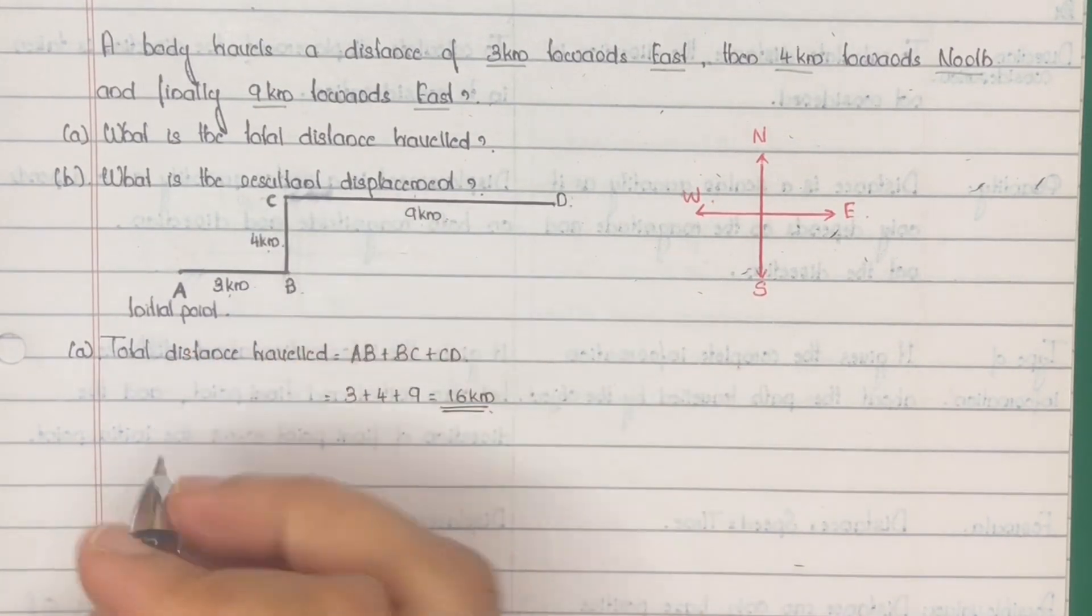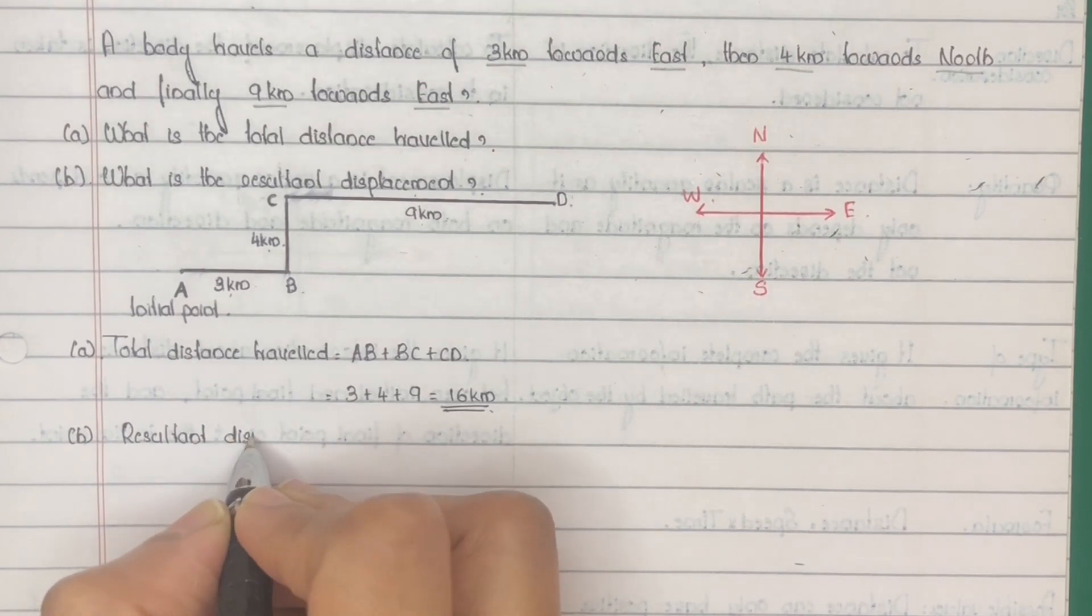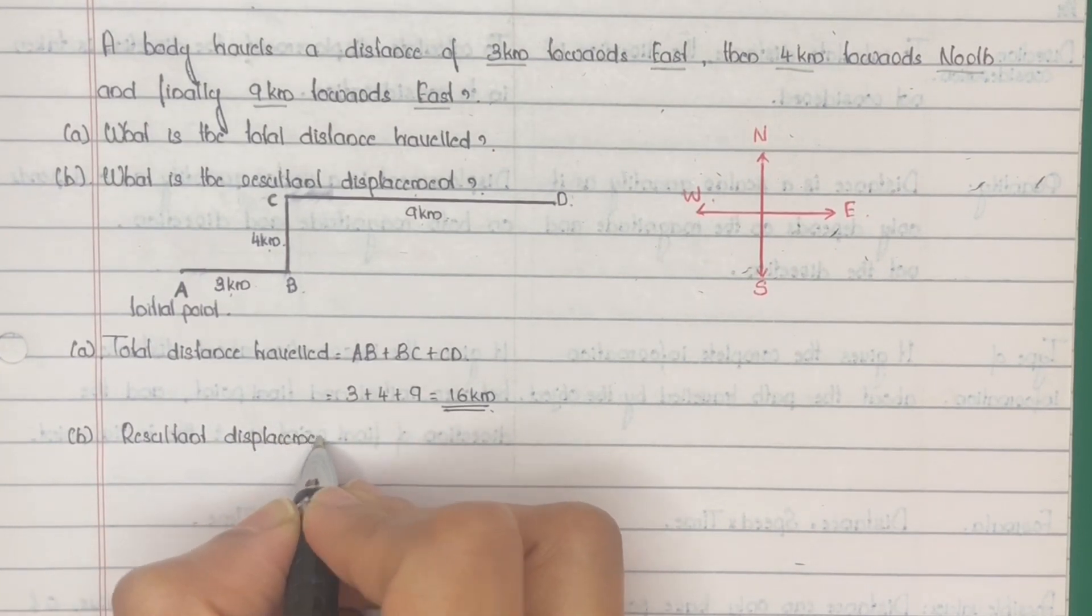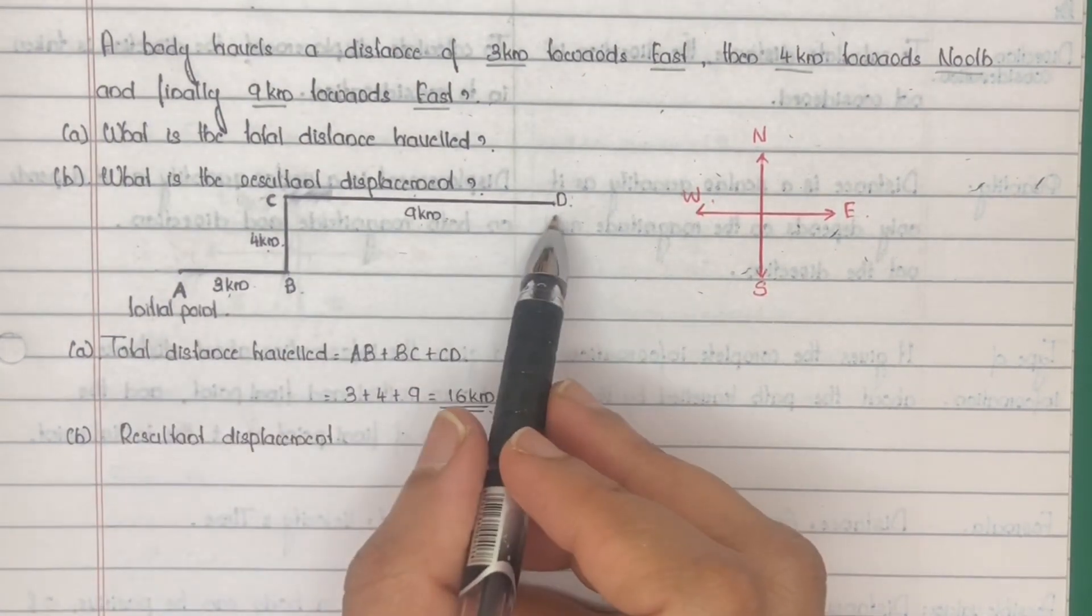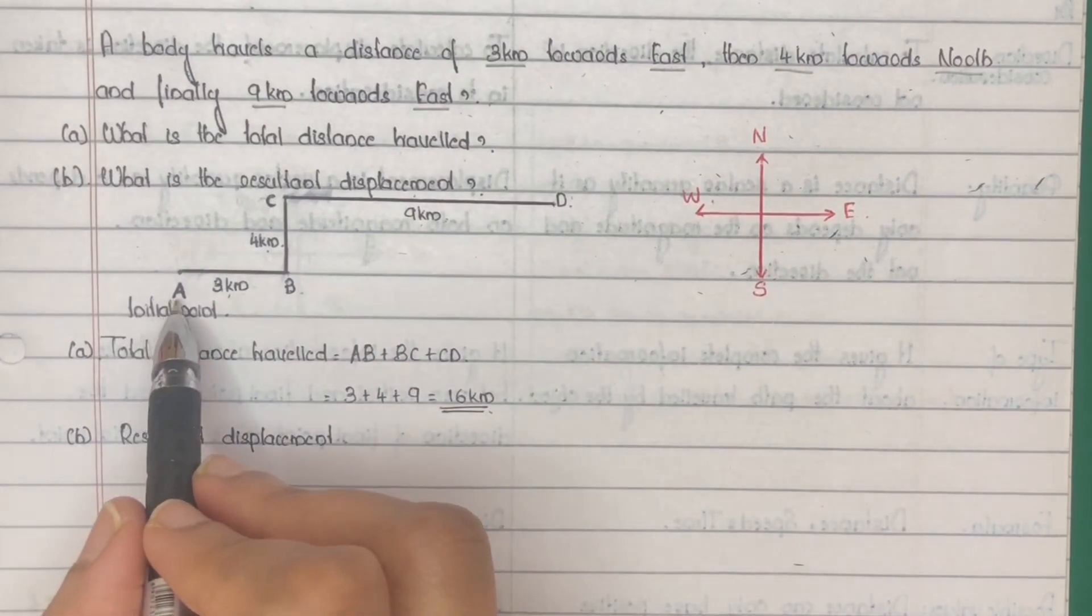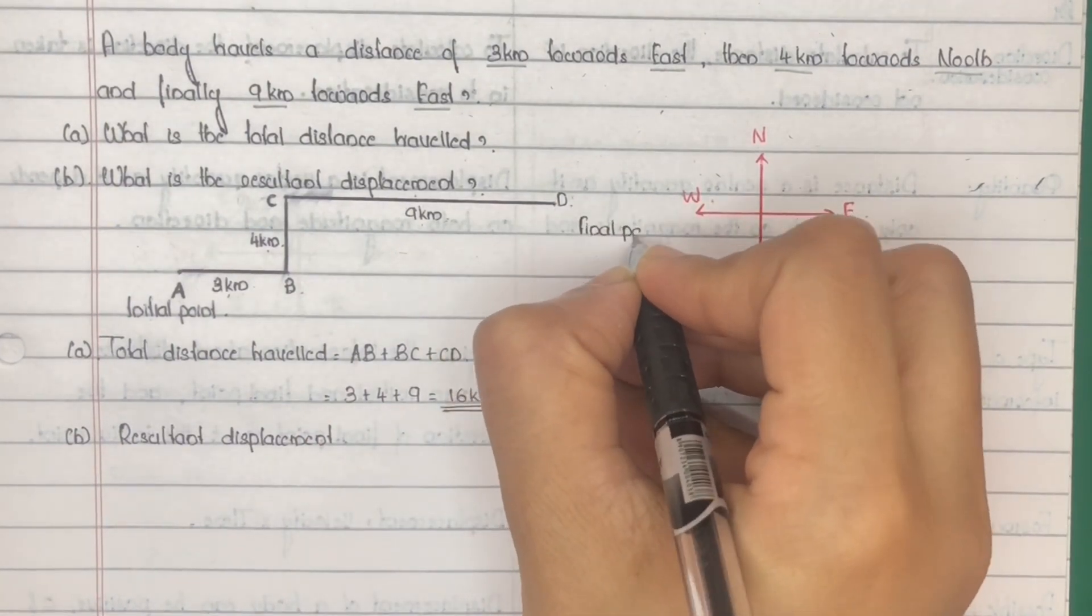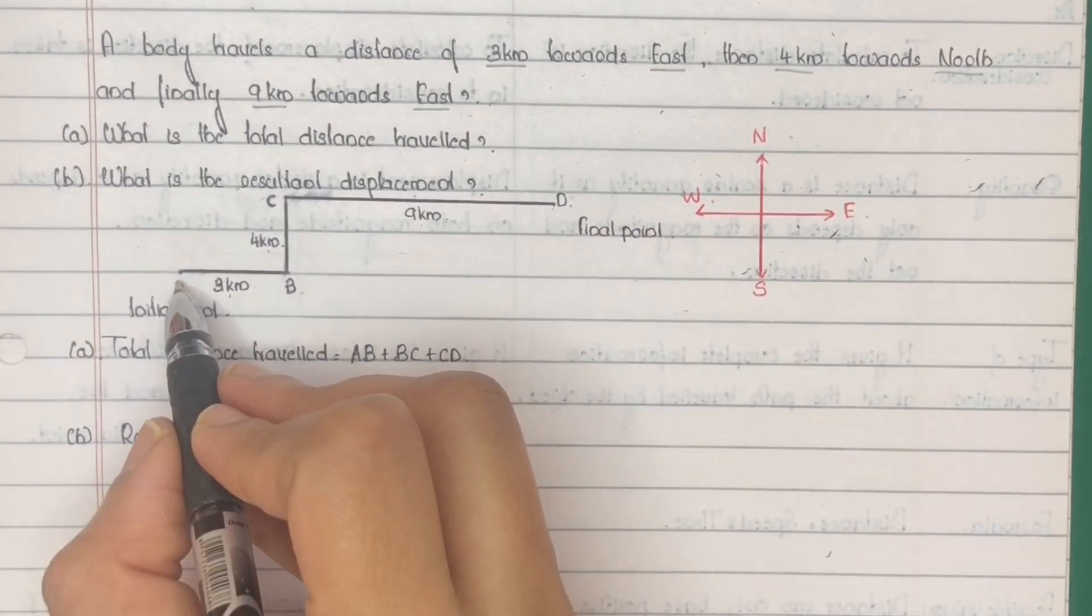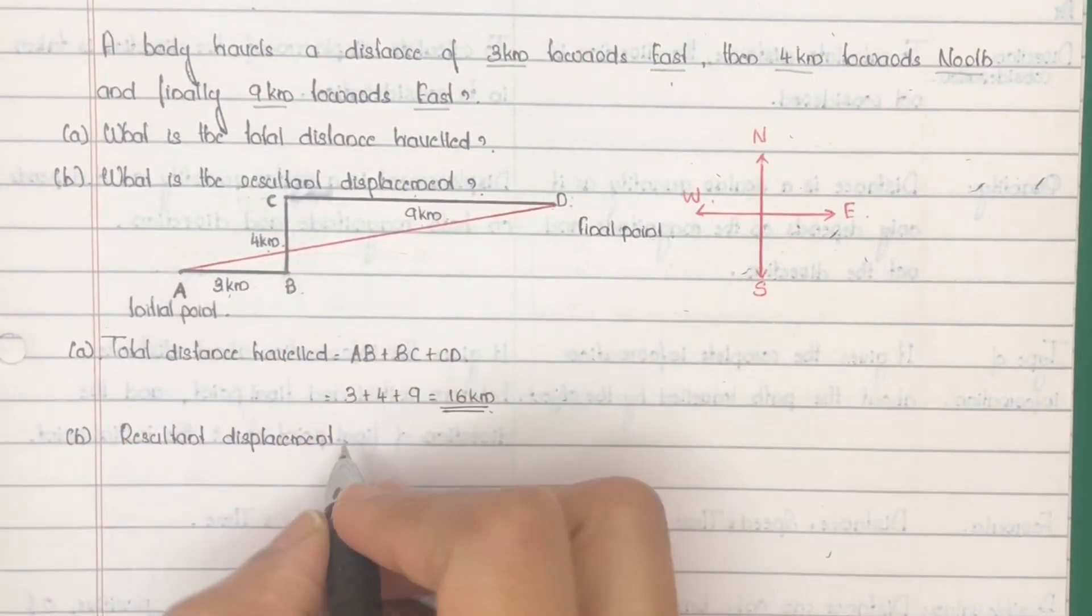Next, displacement. As per definition, displacement is the straight line distance or shortest distance between initial point and final point. Here initial point is point A from where the body starts its journey and final point is point D. So the displacement will be the straight line distance between A and D, which is AD. So resultant displacement is equal to AD.